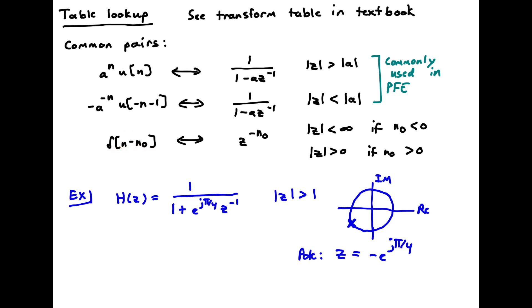And then the final pair is just a single delta at n0. And so that transforms to z to the minus n0. And the ROC is all the z-plane with the possible exception of either infinity or 0, depending on whether n0 is positive or negative.